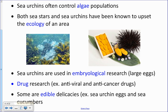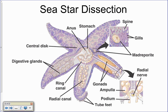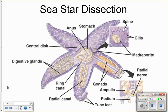Certain types of echinoderms can also be eaten — you can eat sea urchin eggs or the gonads of sea urchins, and sea cucumbers are considered a delicacy in many areas. This final diagram shows the general anatomy of a sea star, illustrating what the inside of a sea star looks like.